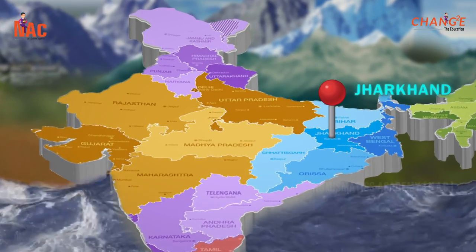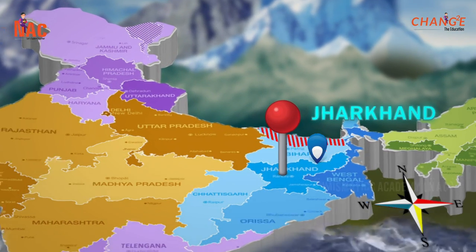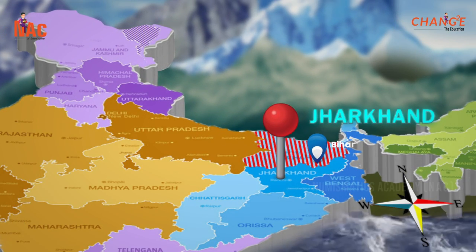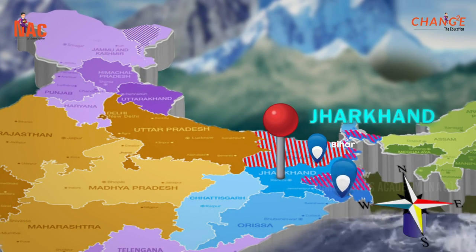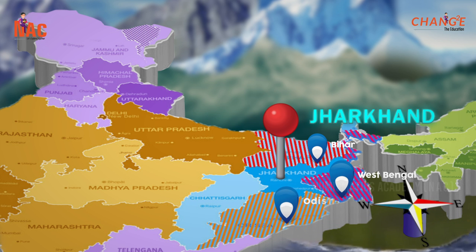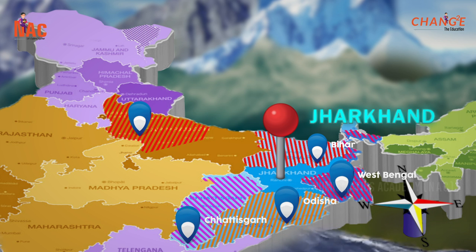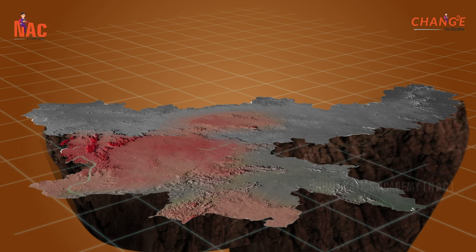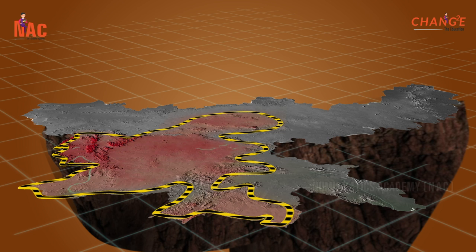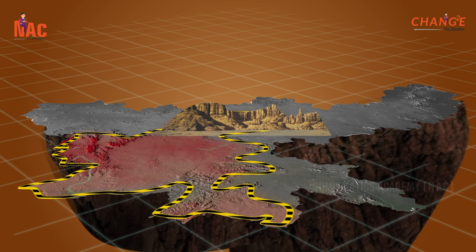The state of Jharkhand is bordered by Bihar to the north, West Bengal to the east, Odisha to the south, Chhattisgarh to the west, and Uttar Pradesh to the northwest. The most prominent physical feature of Jharkhand is the Chhota Nagpur Plateau, part of the vast Deccan Plateau that occupies most of peninsular India.